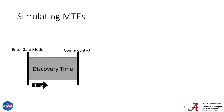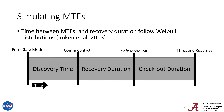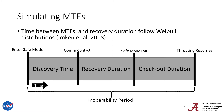Looking at a missed thrust event, they're made up of three main things. The first is the discovery time — this starts when the spacecraft has to enter safe mode and goes until comm contact can be made with Earth to notify them. Next comes the recovery duration: the time period that engineers work on solving the problem, up to the point where they command the spacecraft to exit safe mode. This recovery duration follows a Weibull distribution, as does the time between missed thrust events. Finally, once the spacecraft is commanded to exit safe mode, there's a checkout duration where we ensure everything is functioning nominally, and then thrusting resumes. Together, this is called the inoperability period.